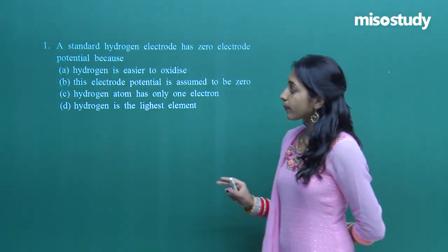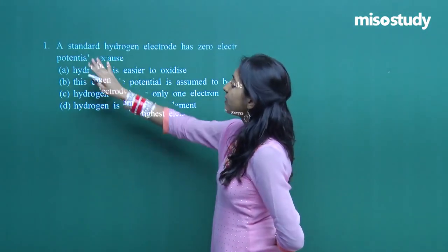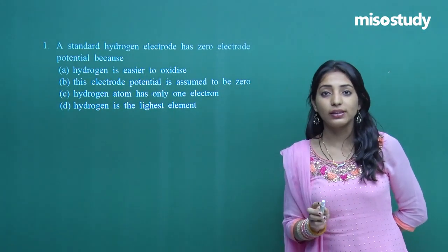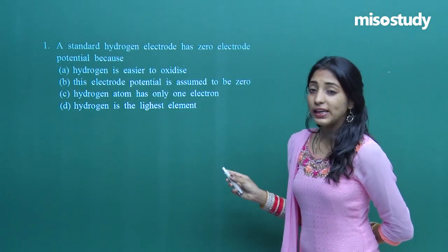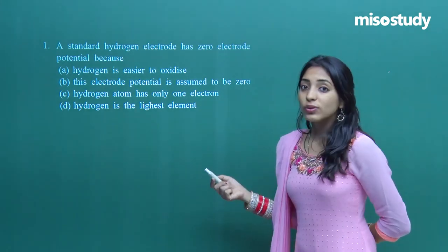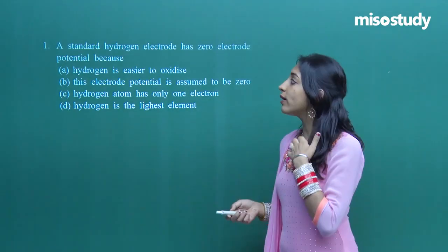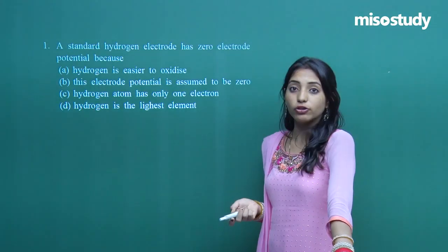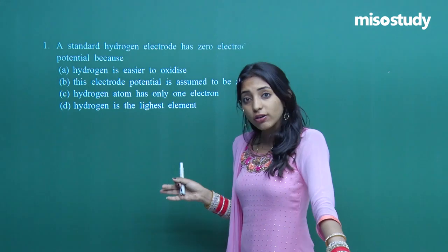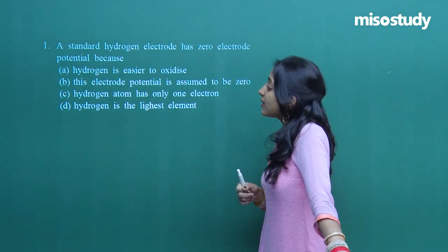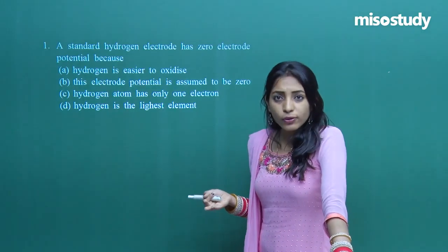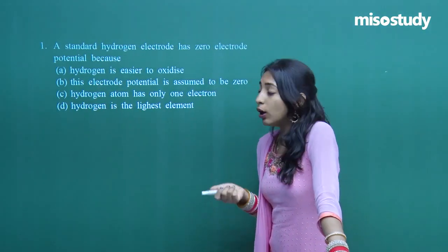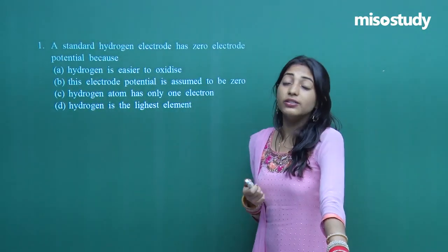The first question says: a standard hydrogen electrode has zero electrode potential. Why? Is it because hydrogen is easier to get oxidized, because this electrode potential is just assumed to be zero, because the hydrogen atom has only one electron, or because hydrogen is the lightest element known?